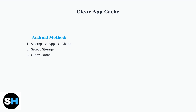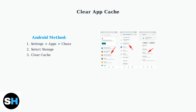First, let's clear your app's cache, which can resolve display problems. Here's exactly what the Android settings path looks like: navigate through Settings, then Apps and Notifications, find the Chase app, and access its storage options to clear the cache.